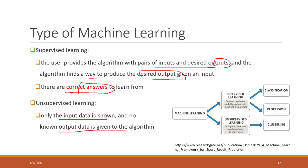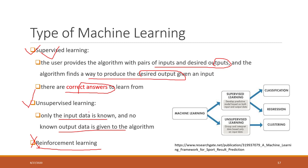In addition to those two types of machine learning models, there is a third one called reinforcement learning. We are not going to cover that in this class — we will spend most of our time on supervised learning and two or three weeks on unsupervised learning, but we will not cover reinforcement learning.